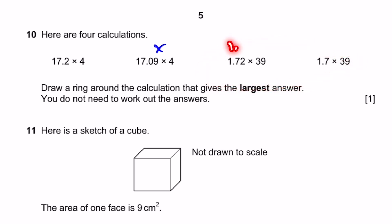Now, we compare these two. 1.72 is greater than 1.7. Right? So, multiplying both by 39, the sign won't change. This is greater. So, this also cannot be the answer. It's one of these two. Now, how to compare these two? Well, we can write 17.2 times 4 as 1.72, which is 17.2 divided by 10. And we times 10 again times 4. And this will be 40. So, 1.72 times 40. This will give the same answer as 17.2 times 4.